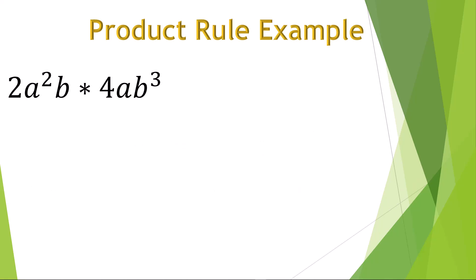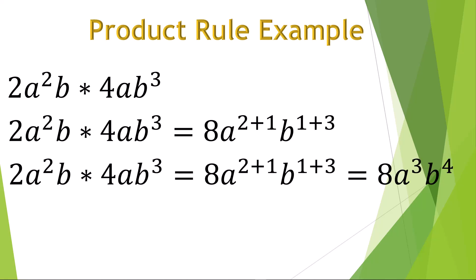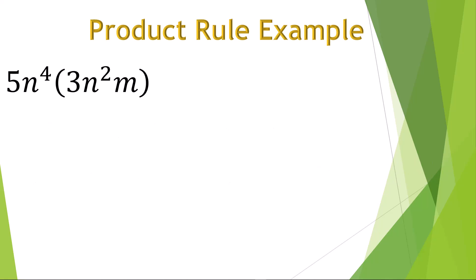Here is another example with two separate powers using the variables a and b. We multiply the coefficients 2 and 4 to make 8, add the exponents for each power, 2 plus 1 for a, and 1 plus 3 for b, and achieve the final result of 8a cubed b to the 4th. Let's look at one more.